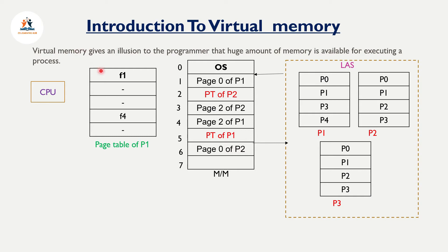The virtual memory concept is used to provide an illusion to the programmer. We can store parts of a process in primary memory. The second point is multiprogramming — more and more processes can be swapped into primary memory.